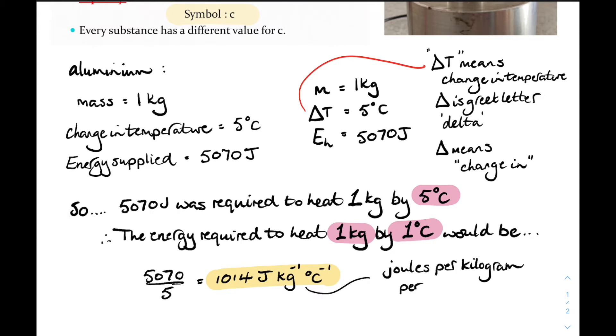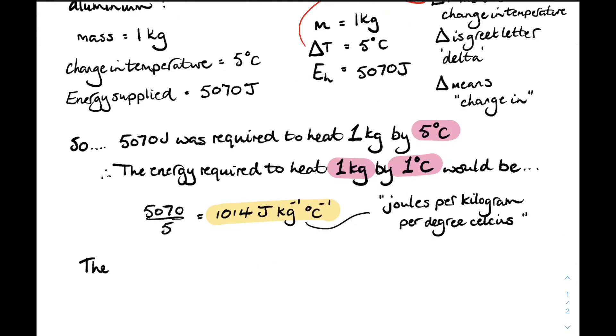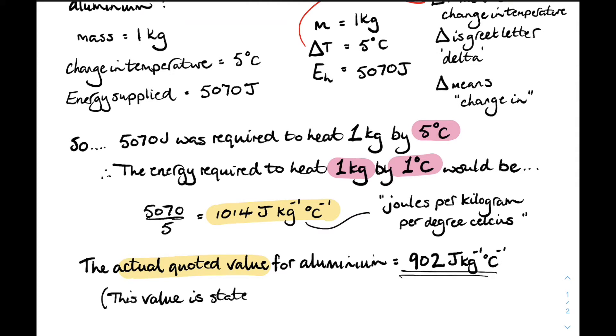What that unit means is it takes that amount of energy, that amount of joules to heat 1 kilogram by 1 degree. Now the quoted value for aluminium is 902 joules for every kilogram for every degree C. So we're not bad but we're a wee bit high. Now all the values that you need for specific heat capacities are on your datasheet. You'll always have them in an exam.